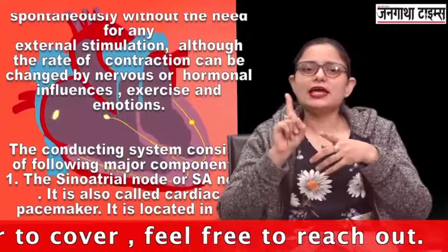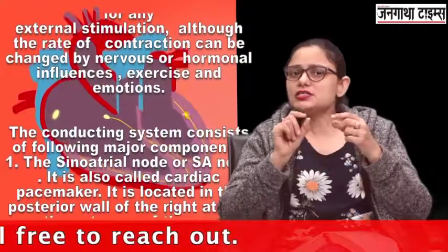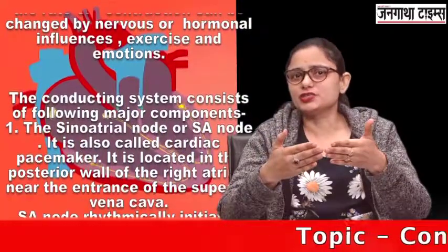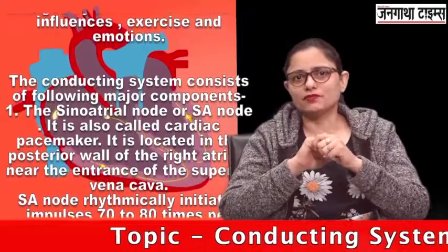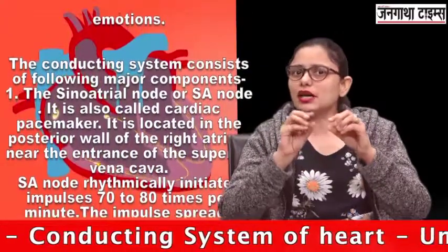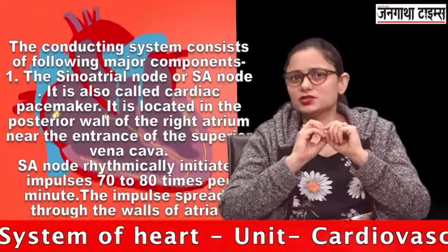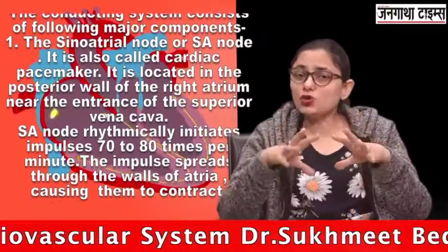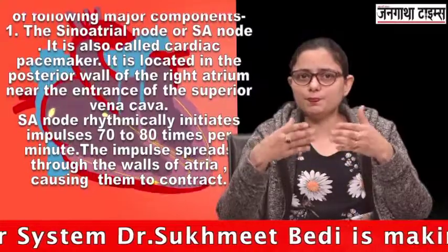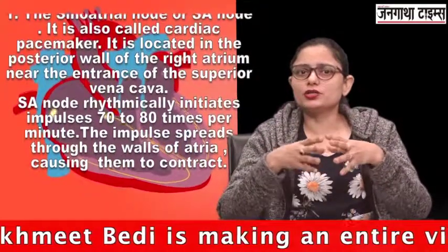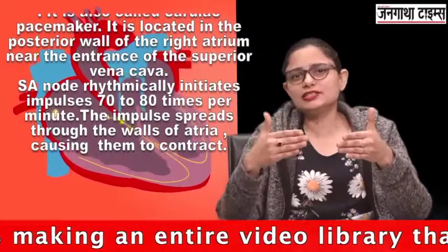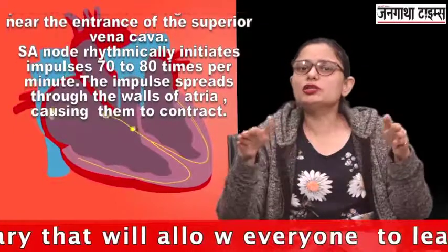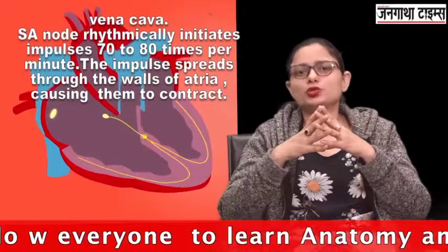The first component is the SA node, or the sino-atrial node. It is a crescent-shaped node present in the posterior wall of the right atrium, near the opening of the superior vena cava. This is also called the cardiac pacemaker, or the pacemaker of the heart, because the SA node regulates the rhythm of the heart. Without any external impulse, this SA node initiates its own impulse about 60 to 80 times per minute, and this impulse travels to the wall of the right atrium and then to the left atrium.